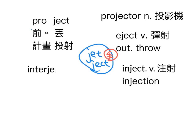接下来INTERJECT，INTER是交互，比如说INTERNET网路，彼此互相交互就变成网路。INTER是交互，JEC是丢，大家彼此在那边丢来丢去，INTERJECT这个动词就是打断的意思。